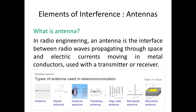What are the elements of interference? First, what is an antenna? In radio engineering, an antenna is an interface between radio waves propagating through space and electric currents moving in metal conductors used with a transmitter or receiver. The diagram shows different types of antenna used in telecommunication.